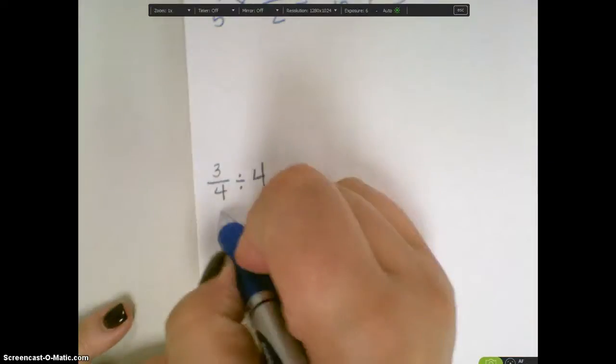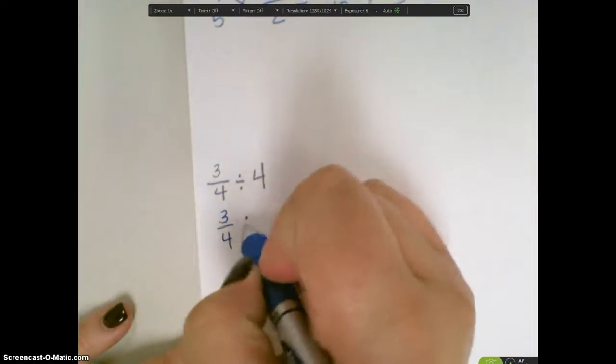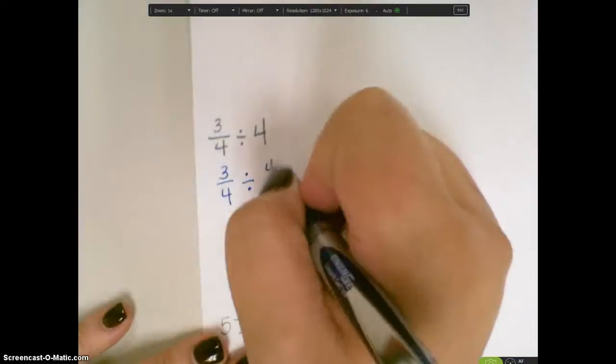To do it by a whole number, I have 3/4. I'm still going to keep it division right now because I need to make 4 a fraction, which would be 4 over 1.